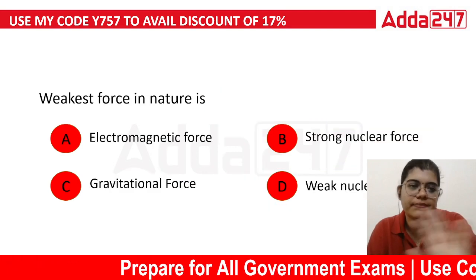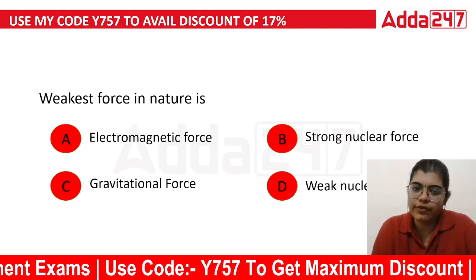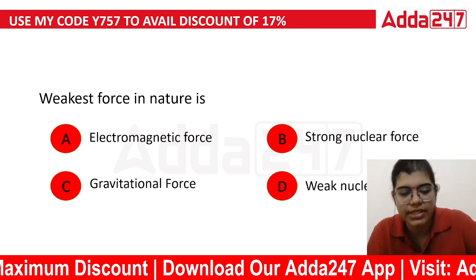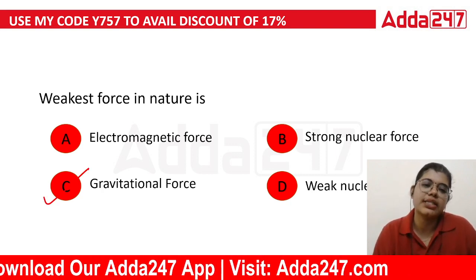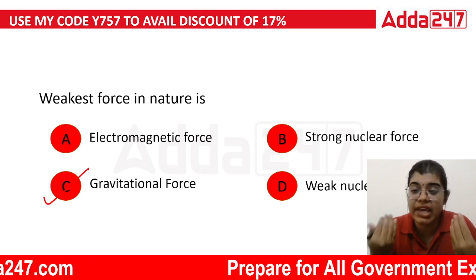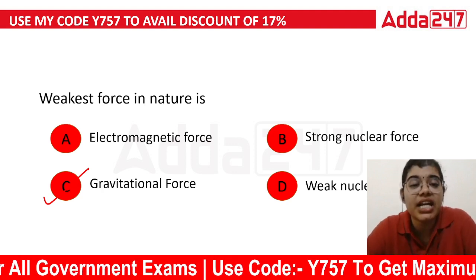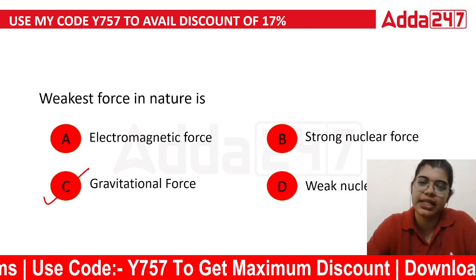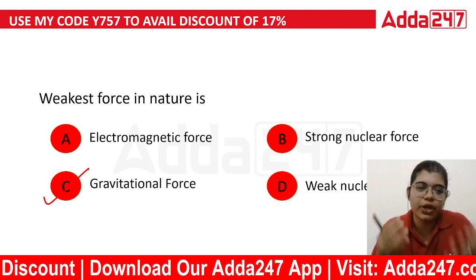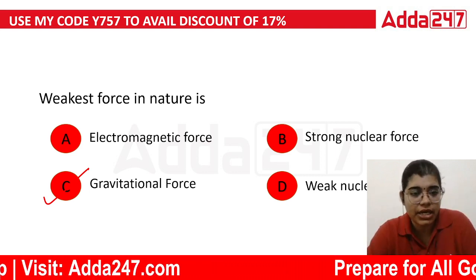Let's move on to the next question. Weakest force in nature is dash. The options are: electromagnetic force, strong nuclear force, gravitational force, and weak nuclear force. The gravitational force acts over the greatest distance but is the weakest force in nature.